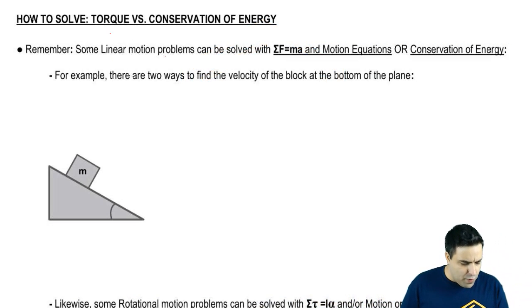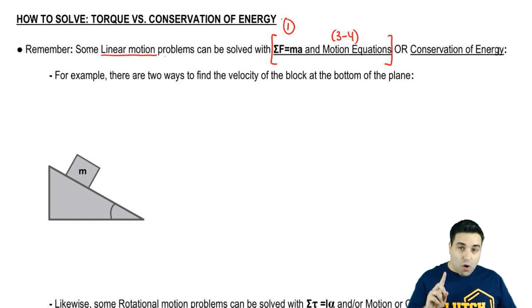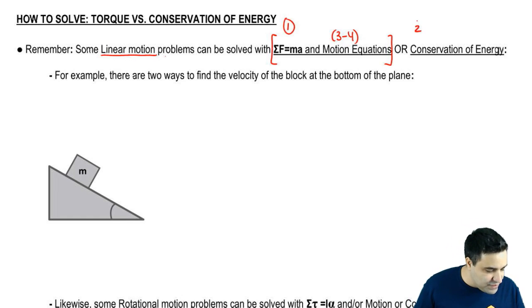So I want to remind you real quick that some linear motion problems we could solve using either F=ma and motion equations. Remember, we have those three to four motion equations, kinematics equations. So we could use a combination of these two methods to solve them. I'm going to call this method one. Or we could have used the conservation of energy equation, method two.